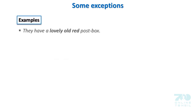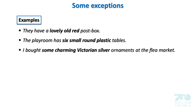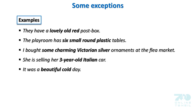Examples of adjective order: They have a lovely old red post box. The playroom has six small round plastic tables. I bought some charming Victorian silver ornaments at the flea market. She is selling her three-year-old Italian car. It was a beautiful cold day.